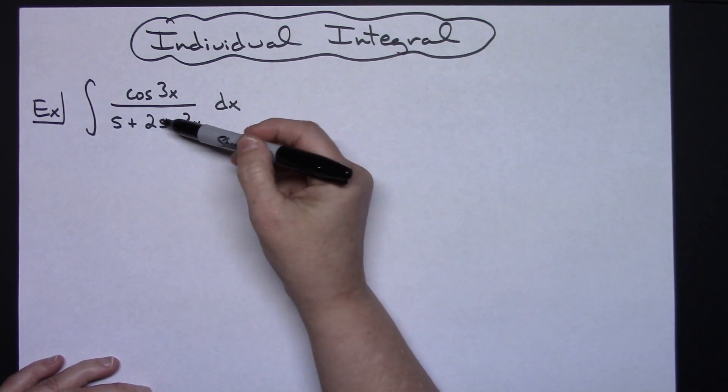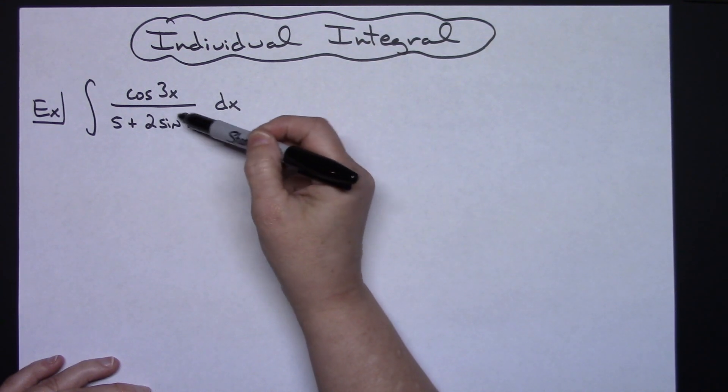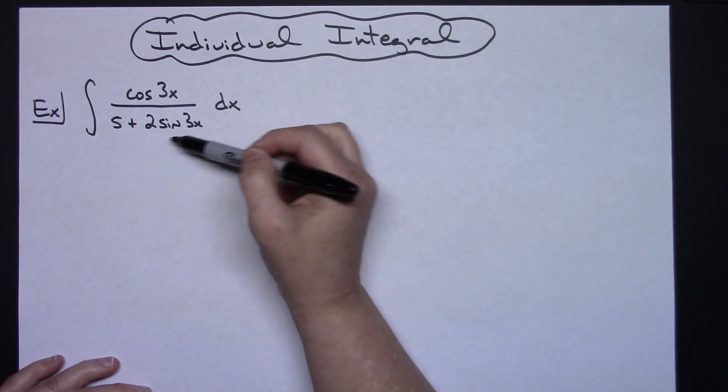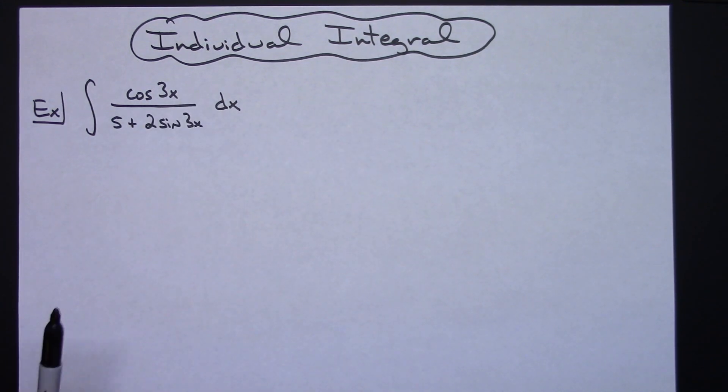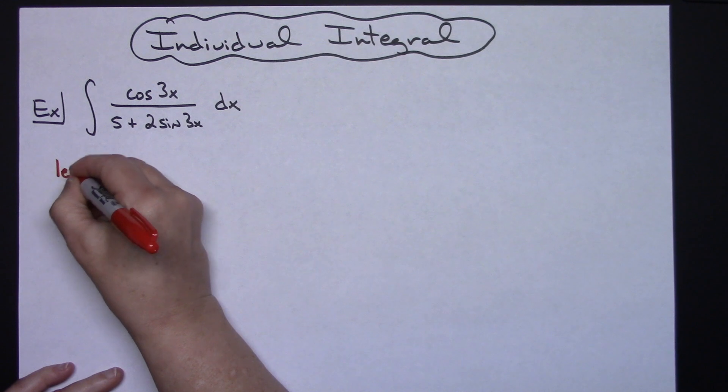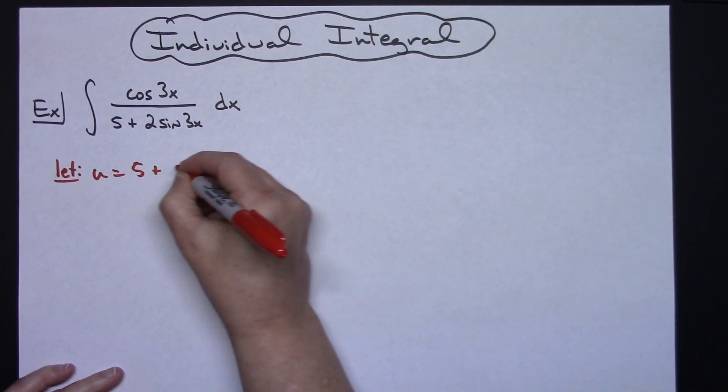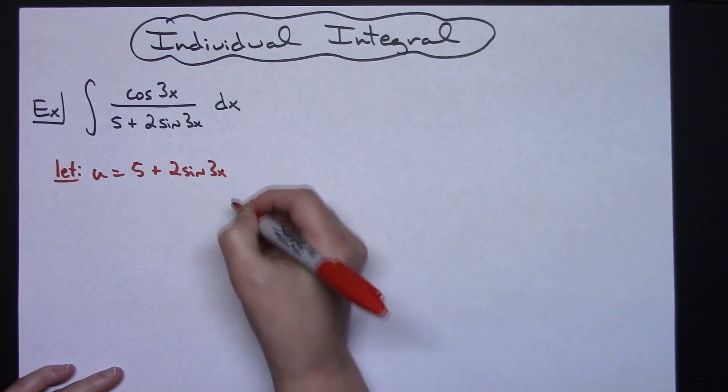If I take a look at this and I know that the derivative of sine is cosine, then I'm going to want to go ahead and let my u be that entire denominator. So I'm going to start by letting u equal 5 plus 2 sine 3x.